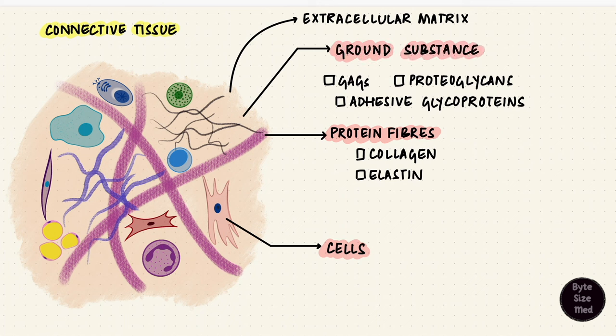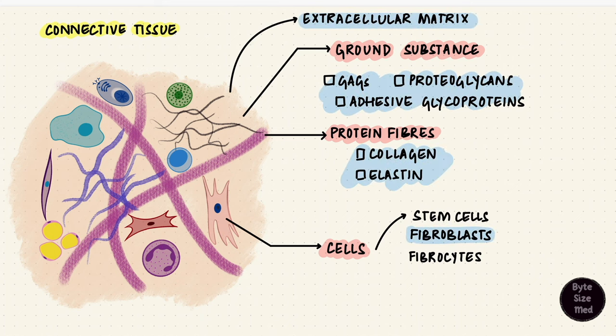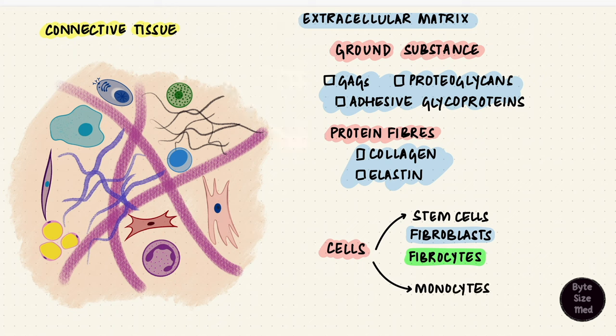But in connective tissue proper, which is your general connective tissue, the main resident cells are fibroblasts and fibrocytes. Fibroblasts come from mesenchymal stem cells. Fibroblasts are the ones that synthesize all this matrix stuff. Fibrocytes are a less active version of fibroblasts. Some cells like monocytes can migrate into connective tissue if they've got some work to do.